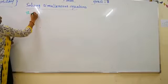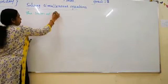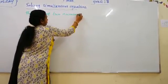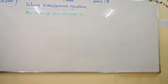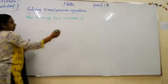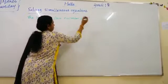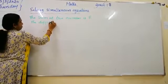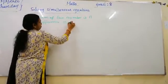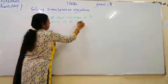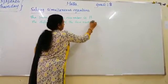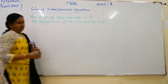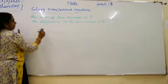That is number 2. The sum of two numbers is eleven, and the difference of the two numbers is five. Find the two numbers.